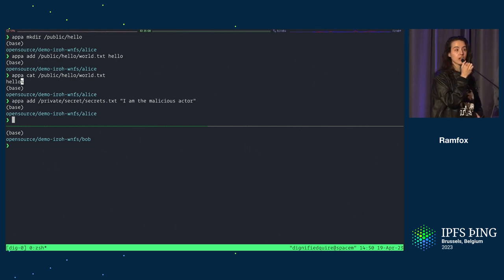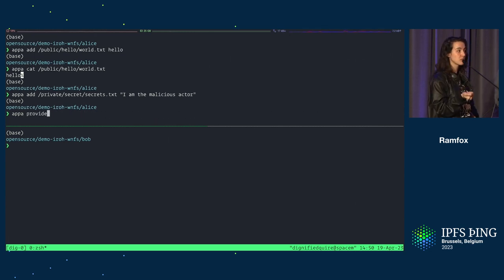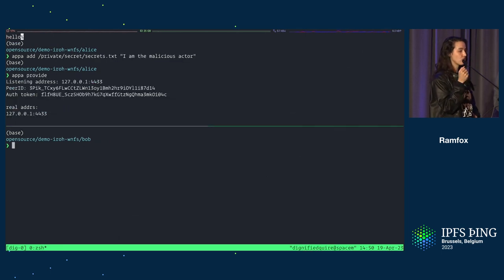Now Alice is like, I trust Bob. I want to have Bob sync, want his file system to see all of my files. So she's going to provide her files, her file system. And let's move over to Bob. So Bob also has to initialize APA. And then he can pull from Alice.